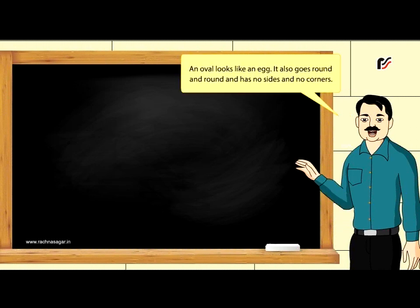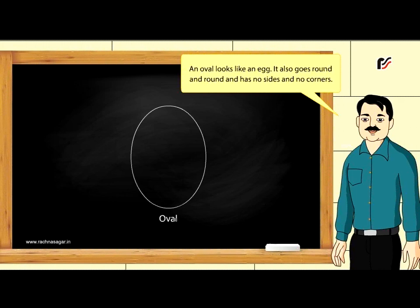An oval looks like an egg. It also goes round and round and has no sides and no corners.